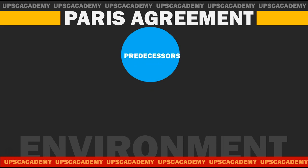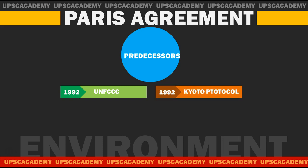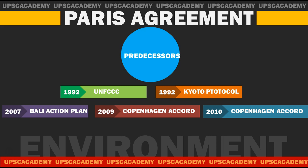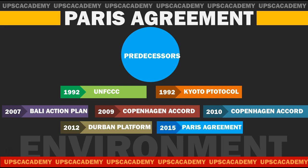The Paris Agreement comes under the broad umbrella of the UNFCCC — United Nations Framework Convention on Climate Change. The first convention was held in 1992 to combat climate change. The next was the Kyoto Protocol in 1997, another major international commitment under UNFCCC. In 2007 there was the Bali Action Plan, in 2009 there was the Copenhagen Accord, and in 2010 there were the Cancun Agreements.